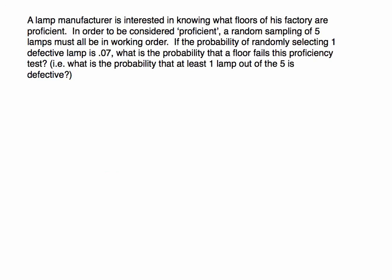Here's a second example. A lamp manufacturer wants to know which floors of their factory are proficient. To be considered proficient, a random sample of five lamps must all be in working order. If the probability of randomly selecting one defective lamp is 0.07, what is the probability that a floor fails this proficiency test? This boils down to: what is the probability that at least one lamp out of the five is defective?